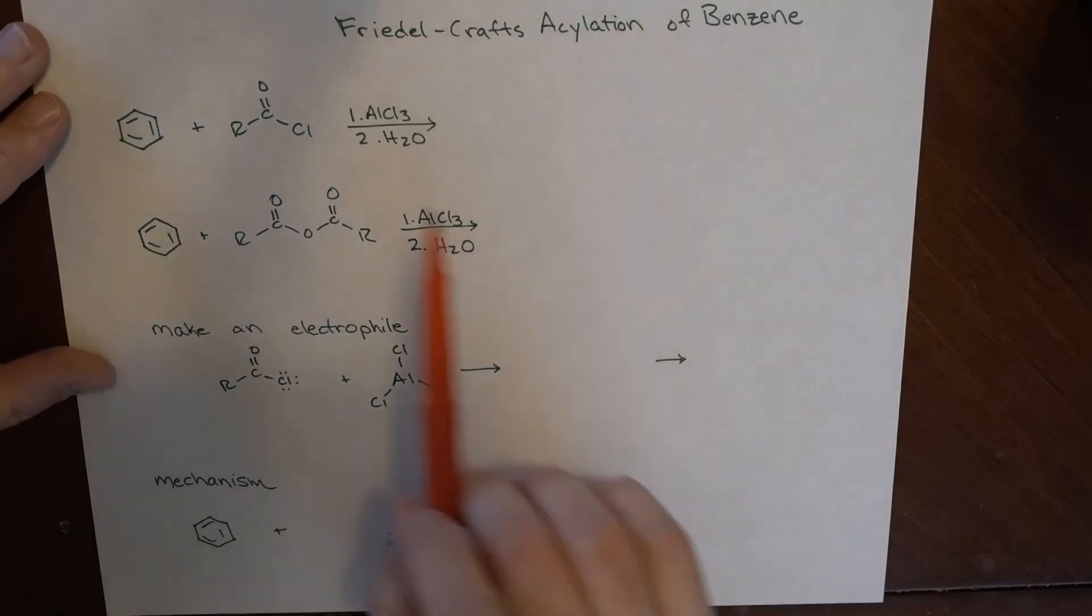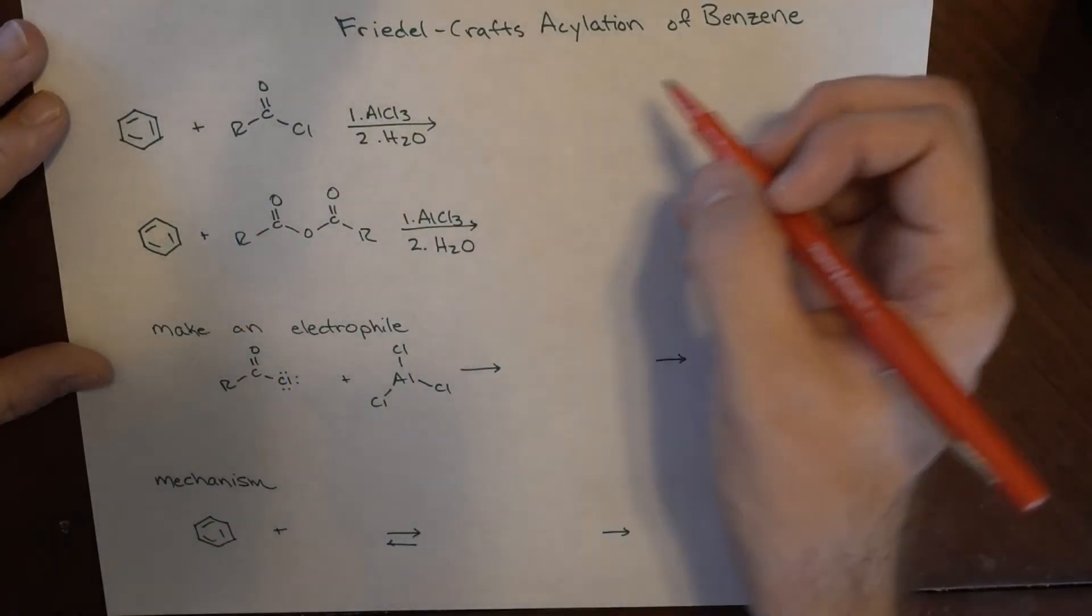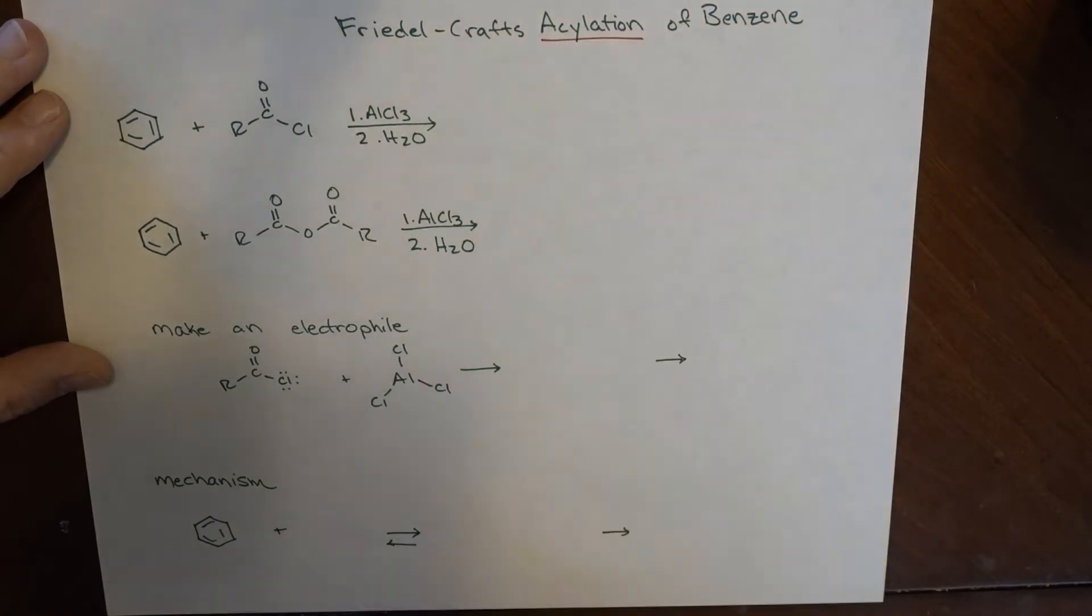Okay, so now what we have here is Friedel-Crafts acylation of benzene, and what that allows us to do is to acylate something.